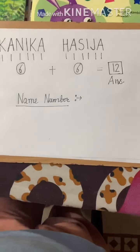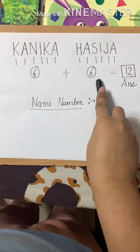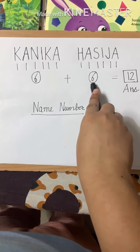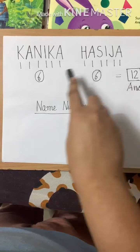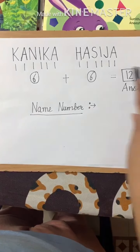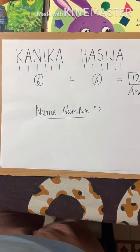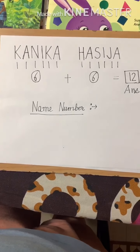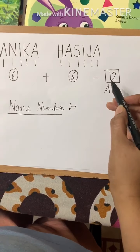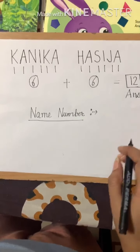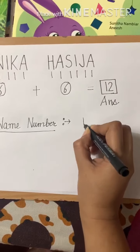Another way of adding is: keep 6 in the mind and put up 6 fingers. Then count onwards from 6, and you will again get 12. So what is my name number? 12.